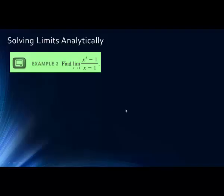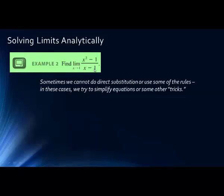Not everything can be solved by the laws — isn't that a truth for all of us in the real world too. Sometimes we have to solve limits analytically. Notice in example two, the limit as x goes to 1: if we plugged in 1, normally we'd use the quotient rule, but the denominator becomes zero, and we can't divide by zero. We cannot just say that this doesn't exist until we try something first. We're going to try some factoring.